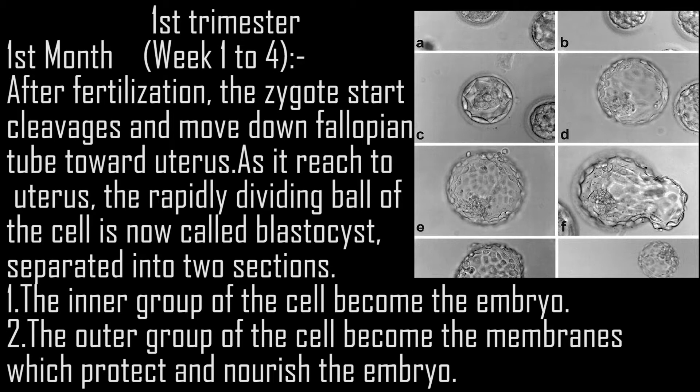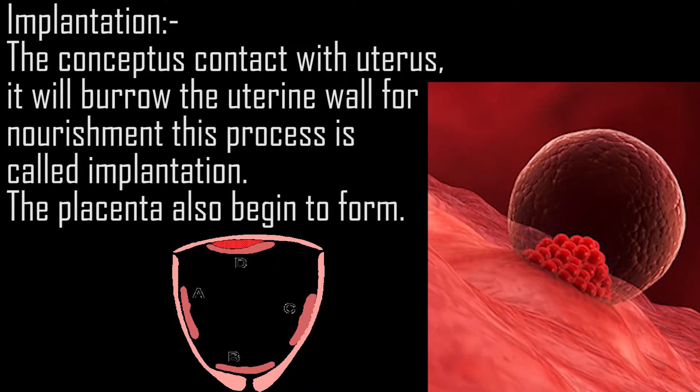The inner group of cells becomes the embryo. The outer group of cells becomes the membranes which protect and nourish the embryo. Implantation: the conceptus contacts the uterus and burrows into the uterine wall for nourishment — this process is called implantation. The placenta also begins to form.